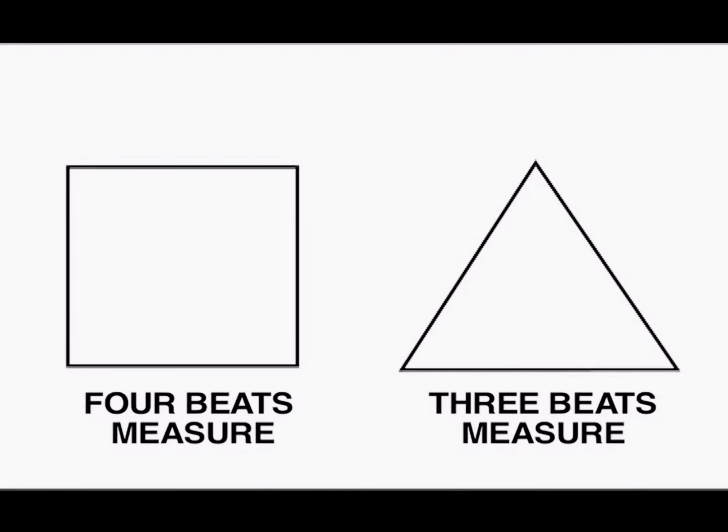Every song is divided into fractions called measures. A measure is a unit of time in music representing a regular grouping of beats. In Music in Color, we represent each measure with a geometric figure, the more common ones being a square and a triangle. A measure is divided by each side of the figure, and each side represents a beat. The square has four beats per measure, and the triangle has three beats per measure.